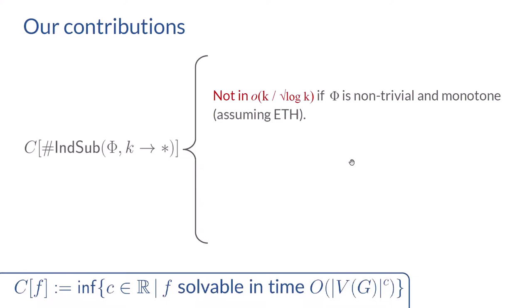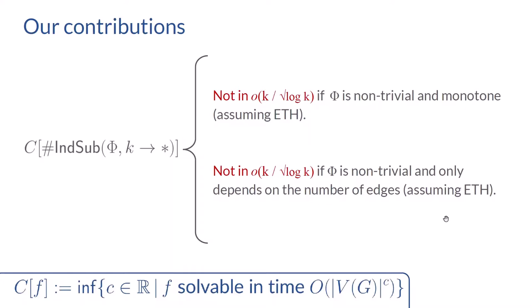What did we prove in this paper? We proved that if φ is a non-trivial and monotone property (closed under taking subgraphs), then the complexity exponent of #InSub(φ, k → *) is not in o(k / √(log k)), assuming ETH. This gives an almost tight conditional lower bound ruling out significant improvements over brute force for monotone properties. As a further corollary, we confirm Meeks' conjecture in an even stronger form: if φ is non-trivial and depends only on the number of edges, the exponent is not in o(k / √(log k)) assuming ETH.